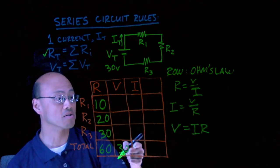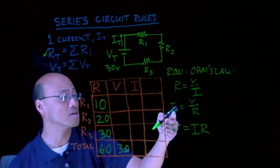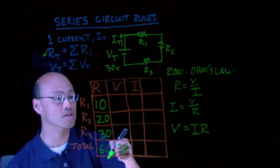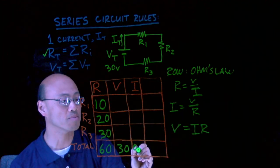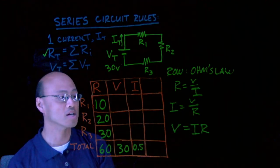So, I could use any version of Ohm's Law to try and fill in a box looking across. Well, look, I need current. I've got voltage and resistance. V over R. 30 divided by 60, I've got half an amp. That's cool.